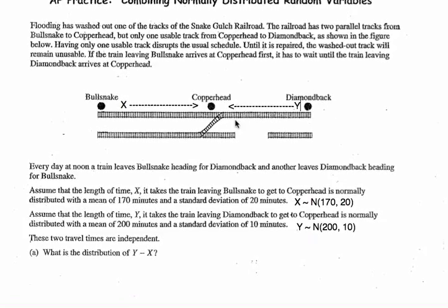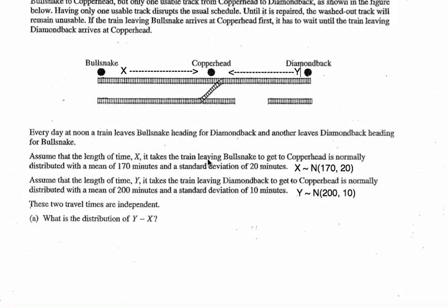The first thing we're interested in is finding the distribution of Y minus X. It's important that these two travel times are independent. Because Y and X are both normal, Y minus X is a linear combination of two normally distributed random variables, so the difference of Y and X will also be distributed normally.